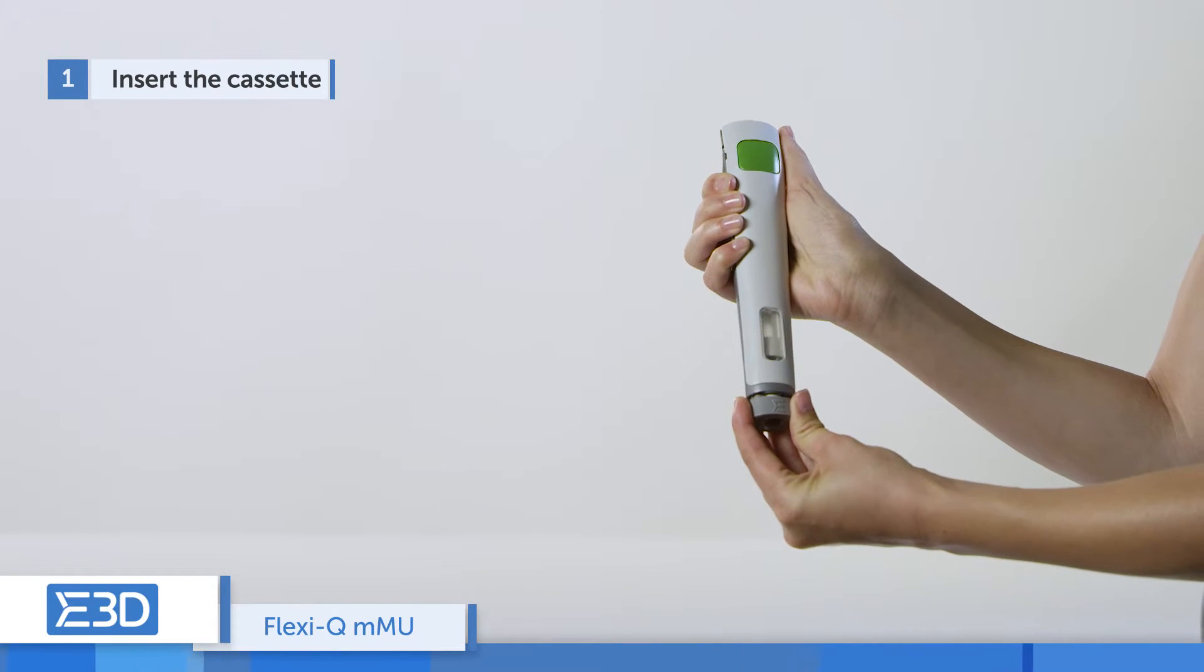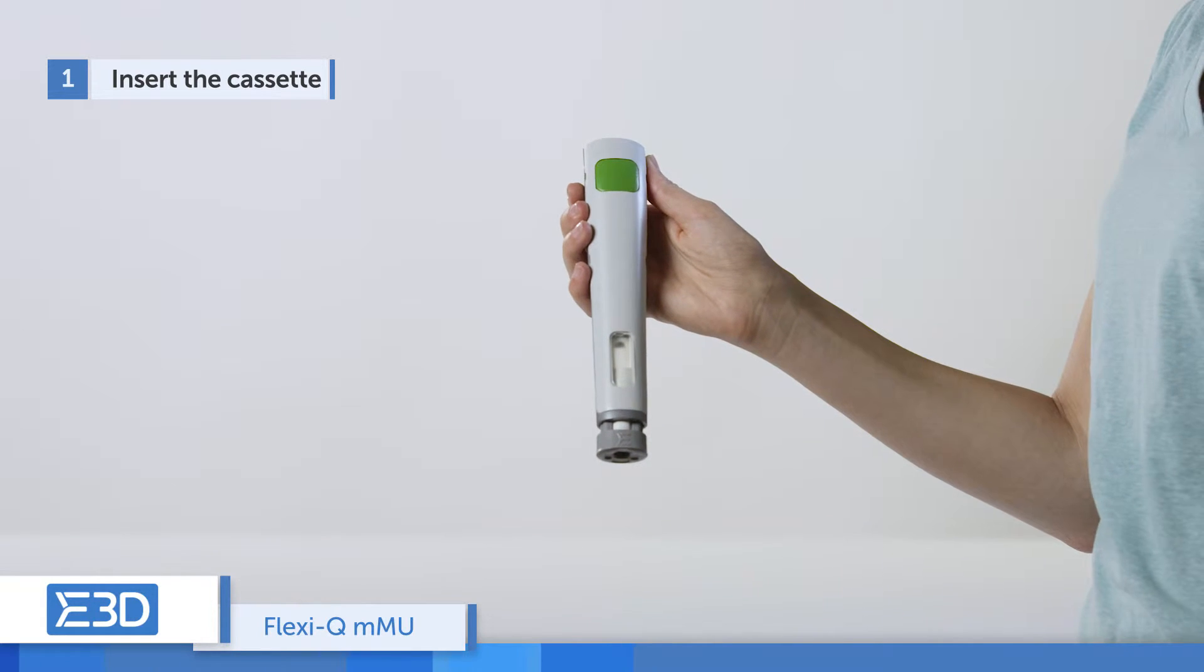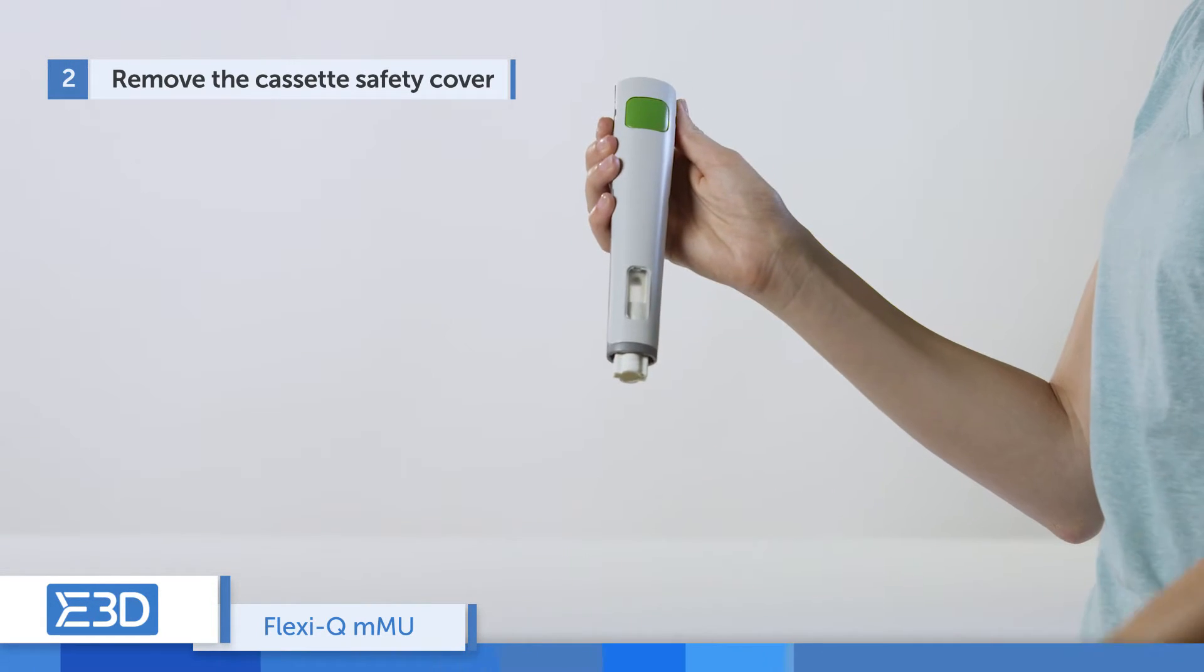Insert the disposable cassette into the reusable device. An audible click indicates that the cassette is fully inserted. Remove the cassette safety cover.